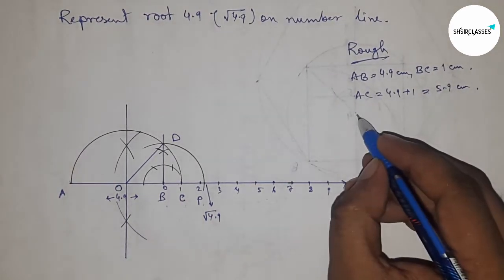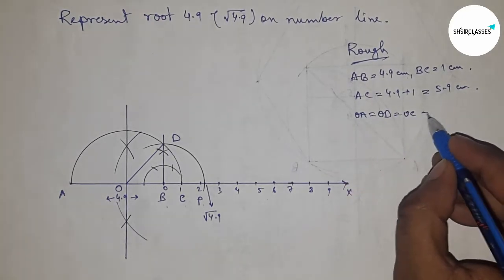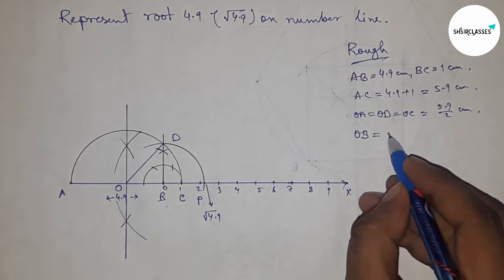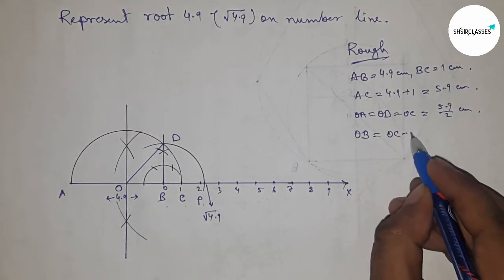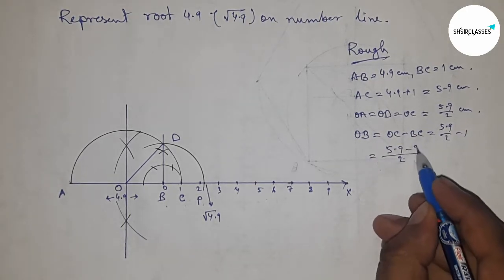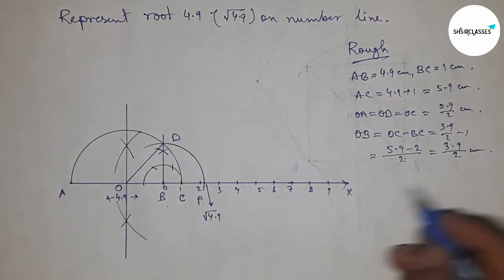Now radius OA equals OD equals OC equals 5.9 by 2 centimeters. And OB equals OC minus BC. Putting the value of OC and BC and calculating this, so this is 3.9 by 2 centimeters.